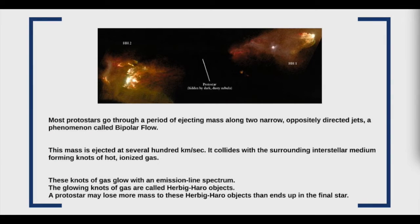In part two of lesson nine, we want to look in a little bit more detail at how a protostar becomes a main sequence star. Protostars, due to the conservation of angular momentum, are spinning and create strong magnetic fields. Charged particles are ejected along the poles, forming big knots of gas. These glowing knots are called Herbig-Haro objects, and a protostar may lose more of its mass to these objects than what remains in the final star.